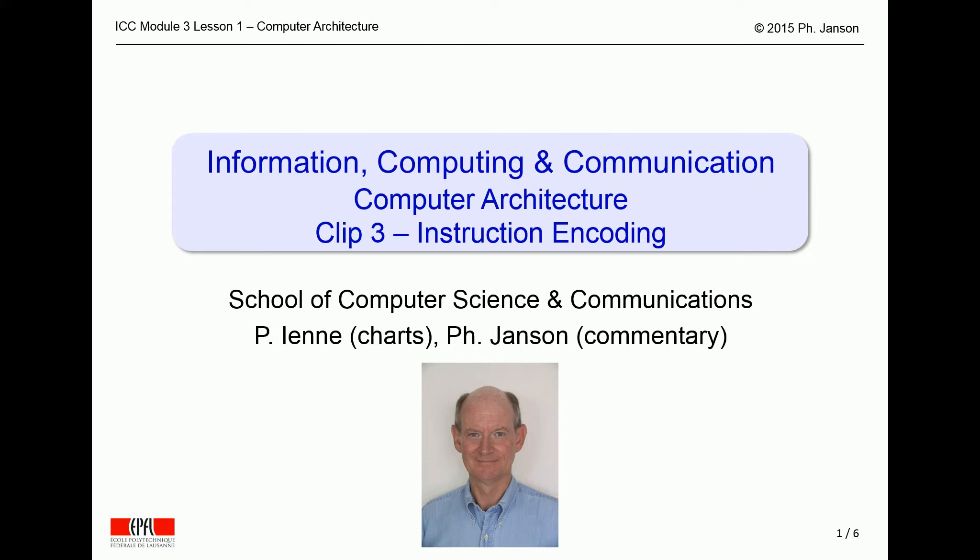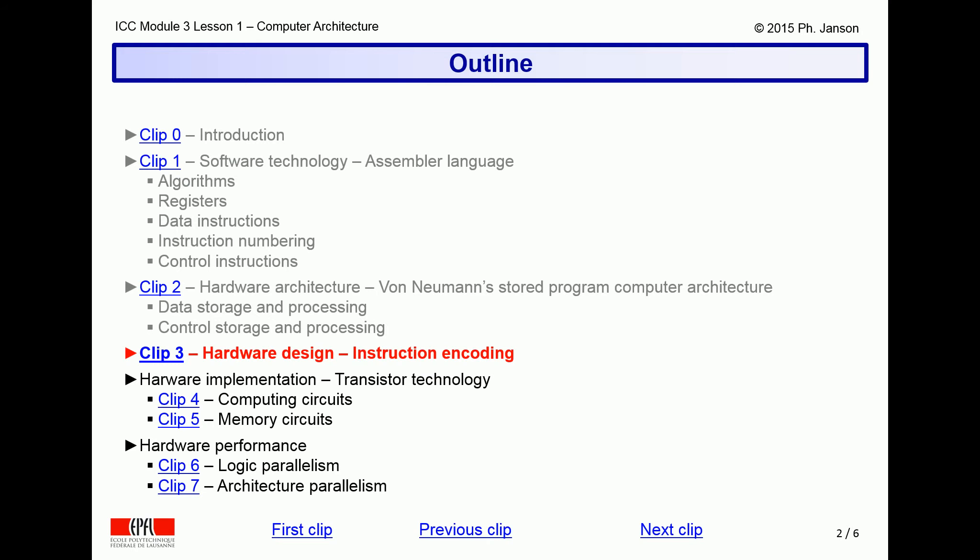This video clip is part of the EPFL introductory course on information, computing, and communication. It is the third in a set of video clips on computer architecture. Given the assembler language defined in the first video clip and the von Neumann architecture defined in the second one, the present video clip bridges the gap by explaining how assembler language instructions can be encoded as binary numbers that computers can decode and understand.